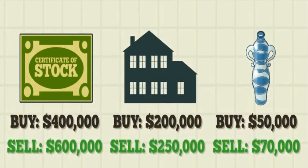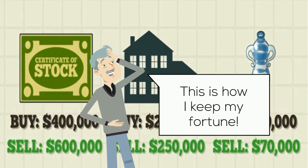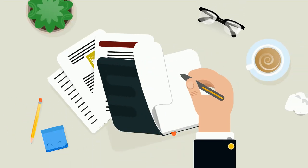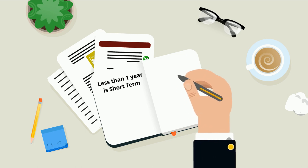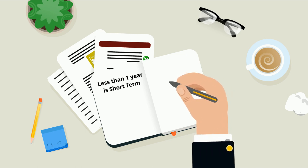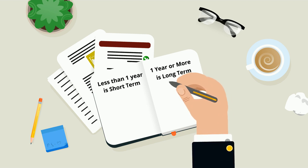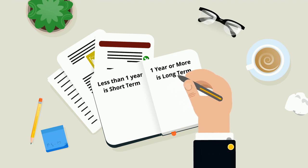Capital gains taxes are interesting. Capital gains is the difference between the cost of an asset when it's purchased versus when it's sold. If the asset is held for less than a year, the profit is called short-term capital gains and is taxed as ordinary income. If the asset is held for a year or more, it's considered long-term capital gains and is taxed at 0%, 15%, or 20%, according to your tax bracket.